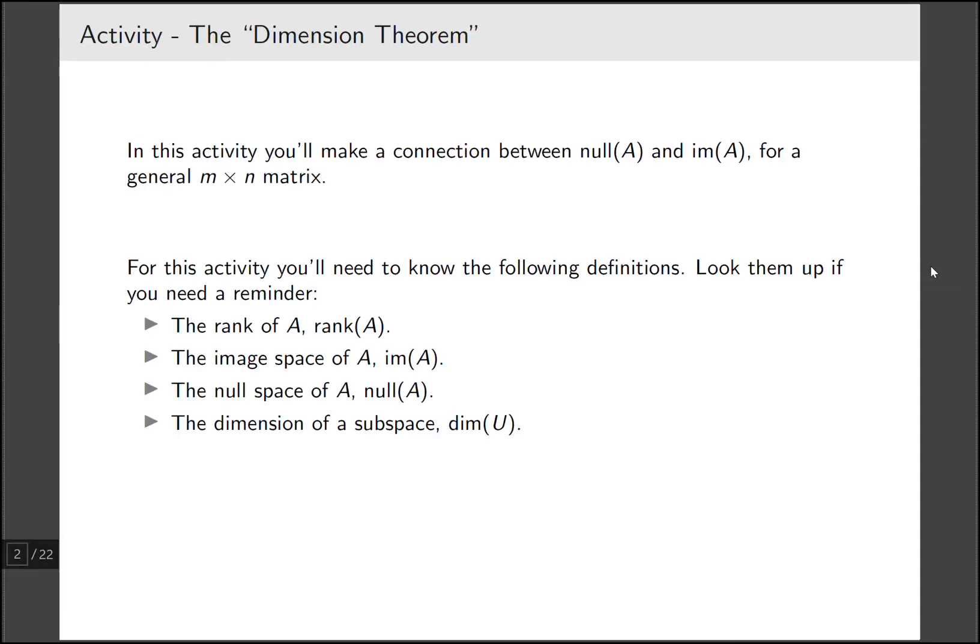In this activity we'll make a connection between the null space and the image space for a general m by n matrix. It's assumed that you've already done these activities and here I'll be walking through my solutions, but you'll get a lot more out of this activity if you do it on your own first.